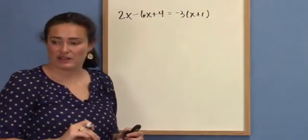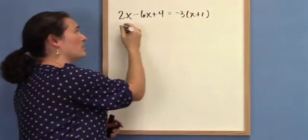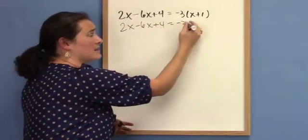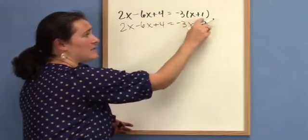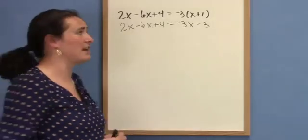So if I'm approaching this problem, the first thing I might want to do is use the distributive property on the right-hand side. This negative 3 times x plus 1 is rewritten as negative 3 times x and then negative 3 times 1. That's called the distributive property of multiplication over addition. That's one of my justifications.